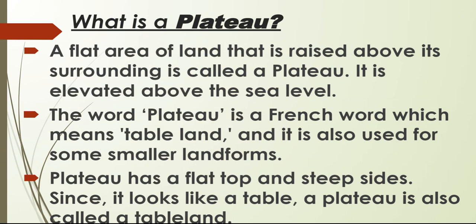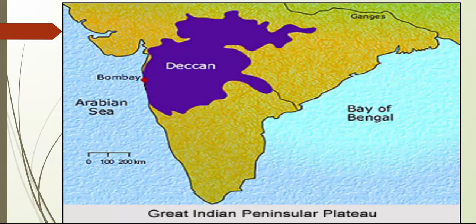A plateau has a flat top and steep sides. Since it looks like a table, a plateau is also called a tableland. So now you know the answer: if I ask why a plateau is called a tableland, you can say it's because a plateau has a flat top and steep sides, just like a table.